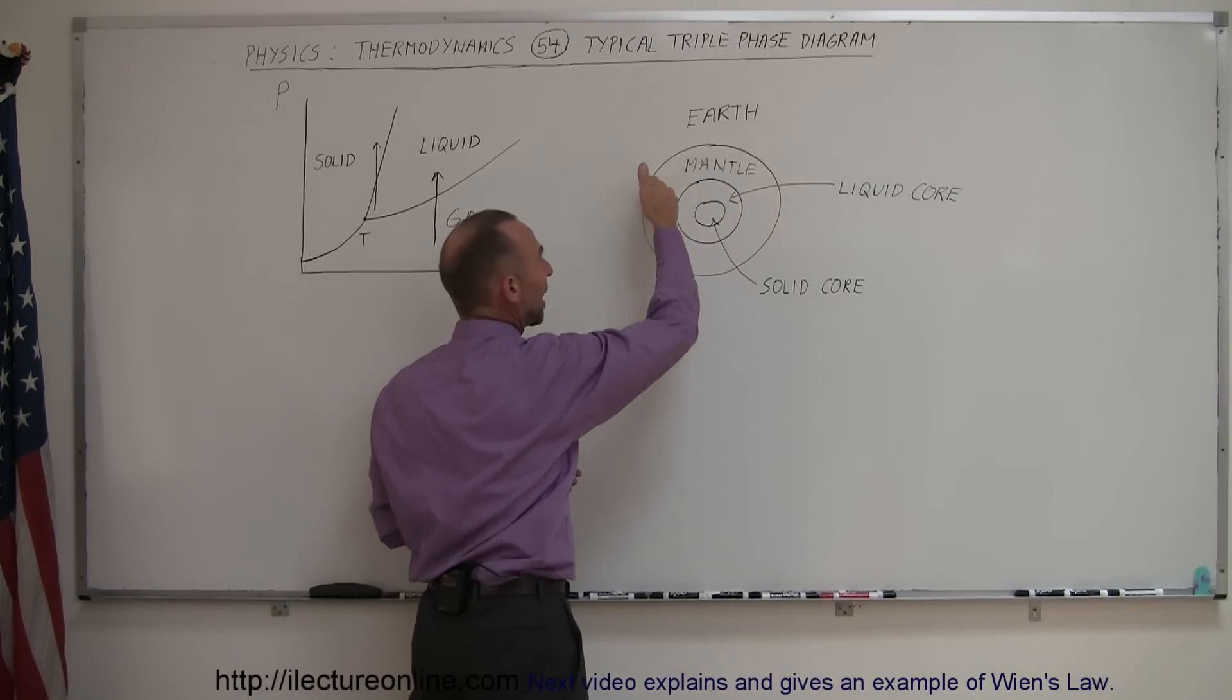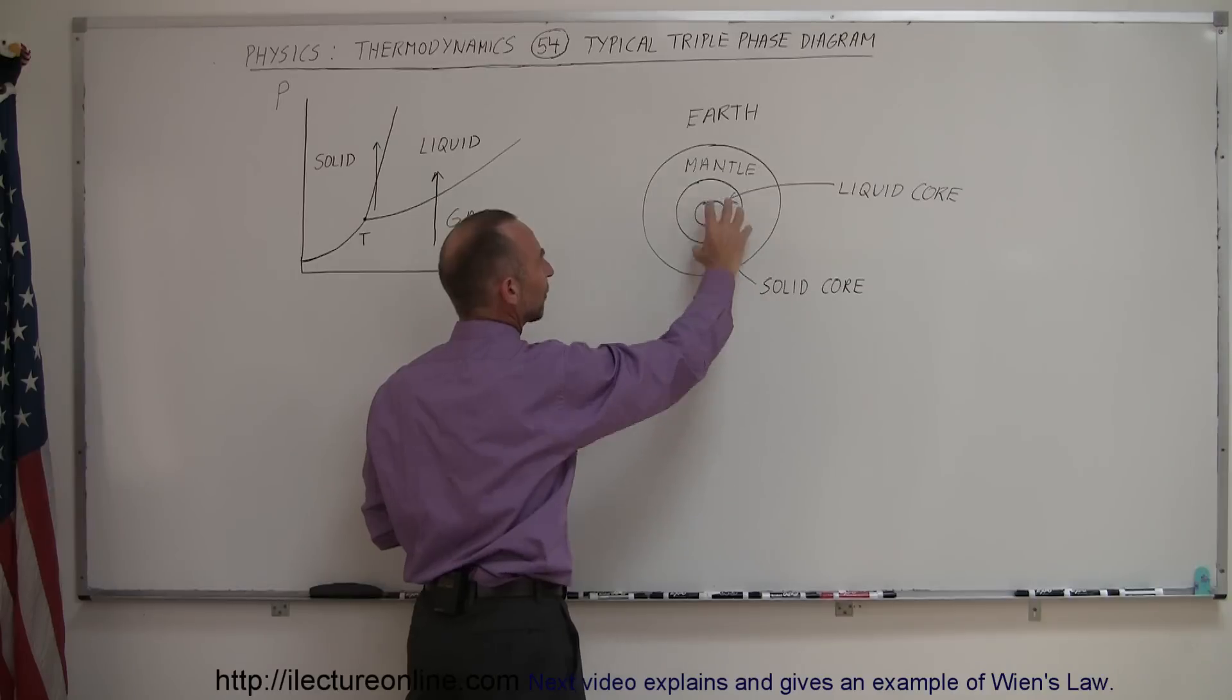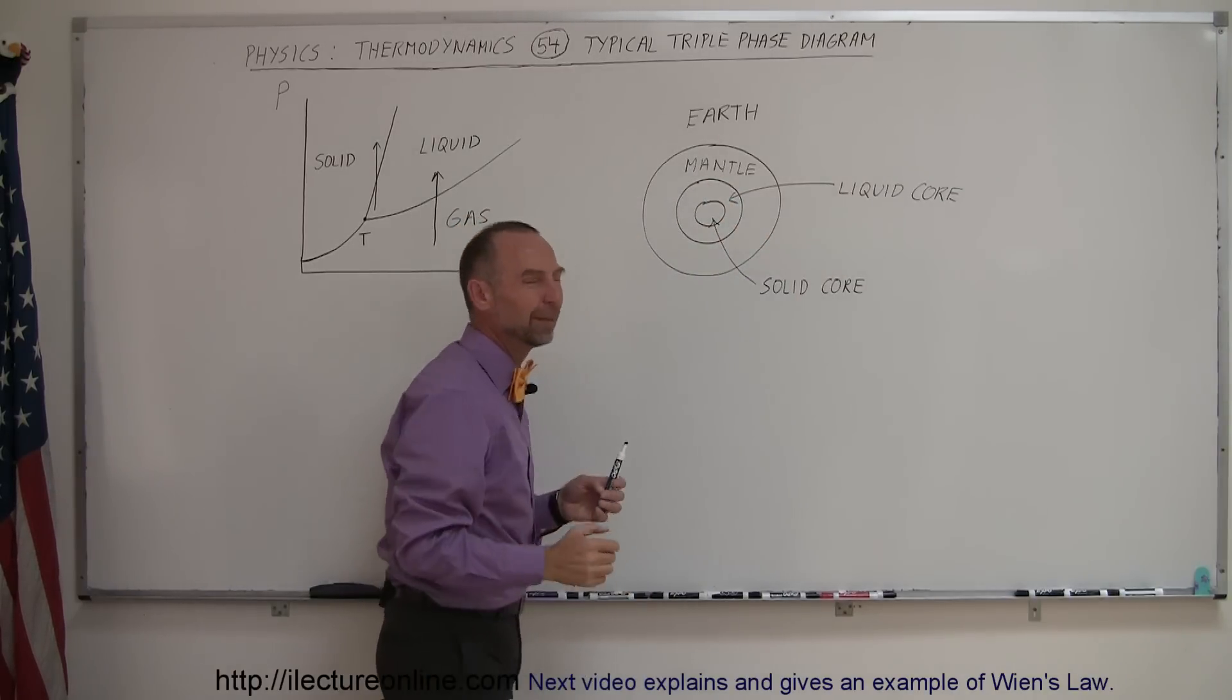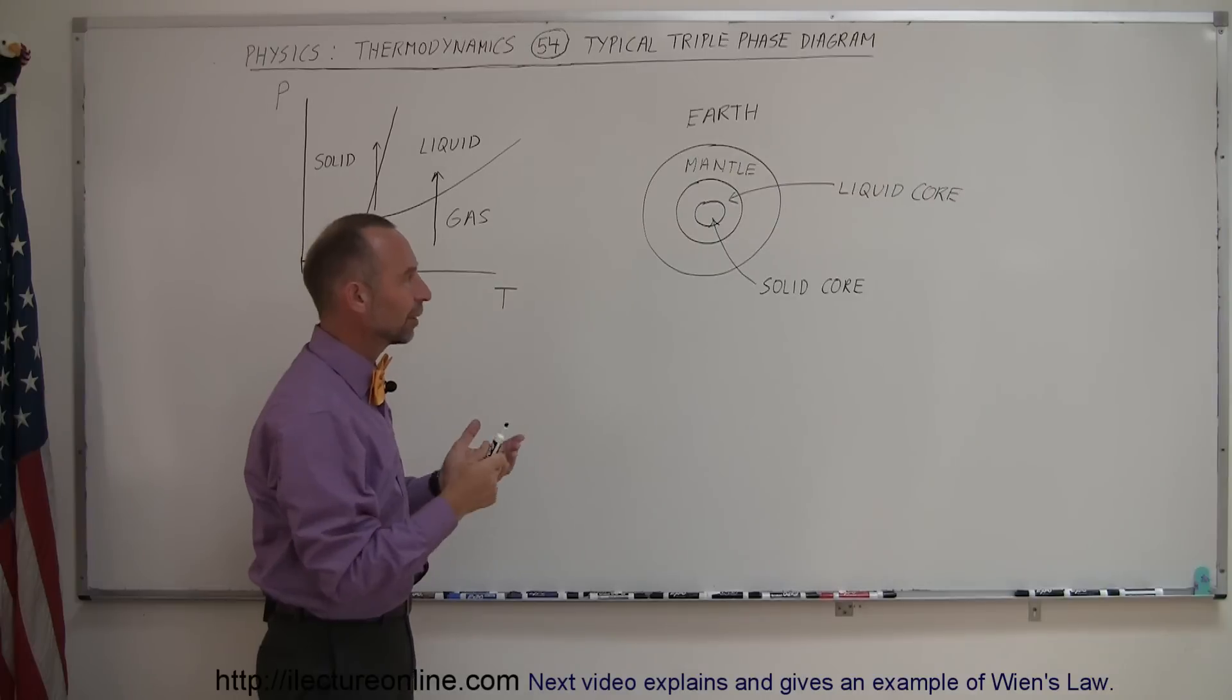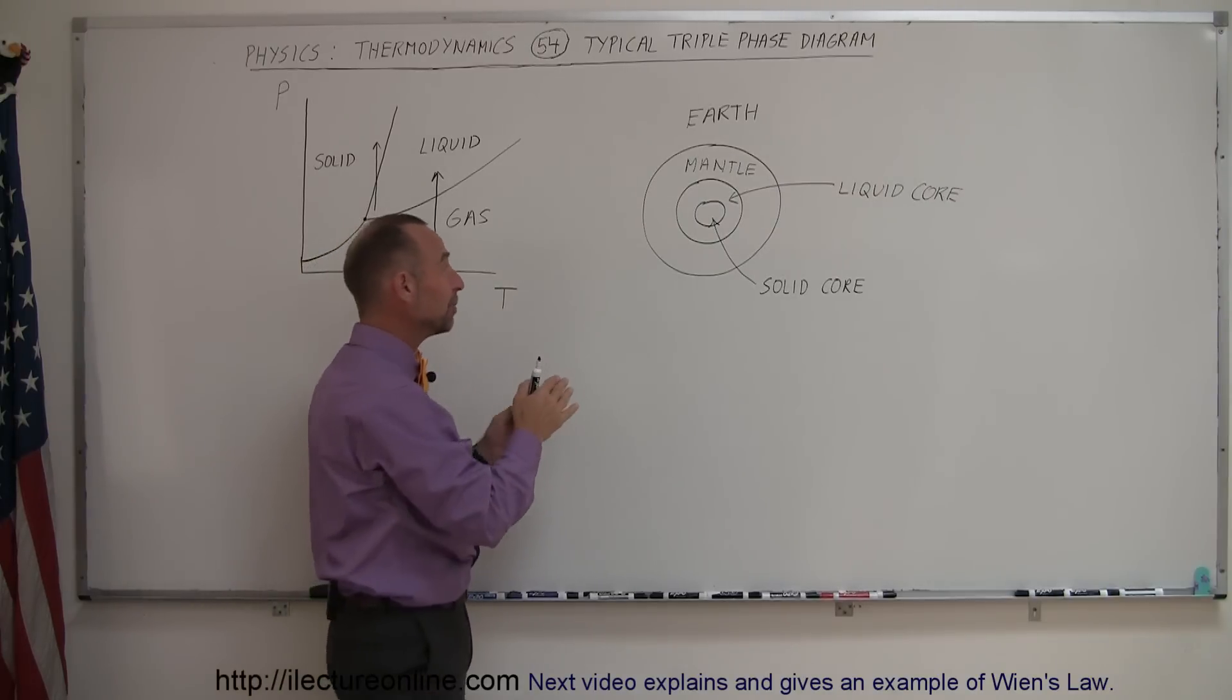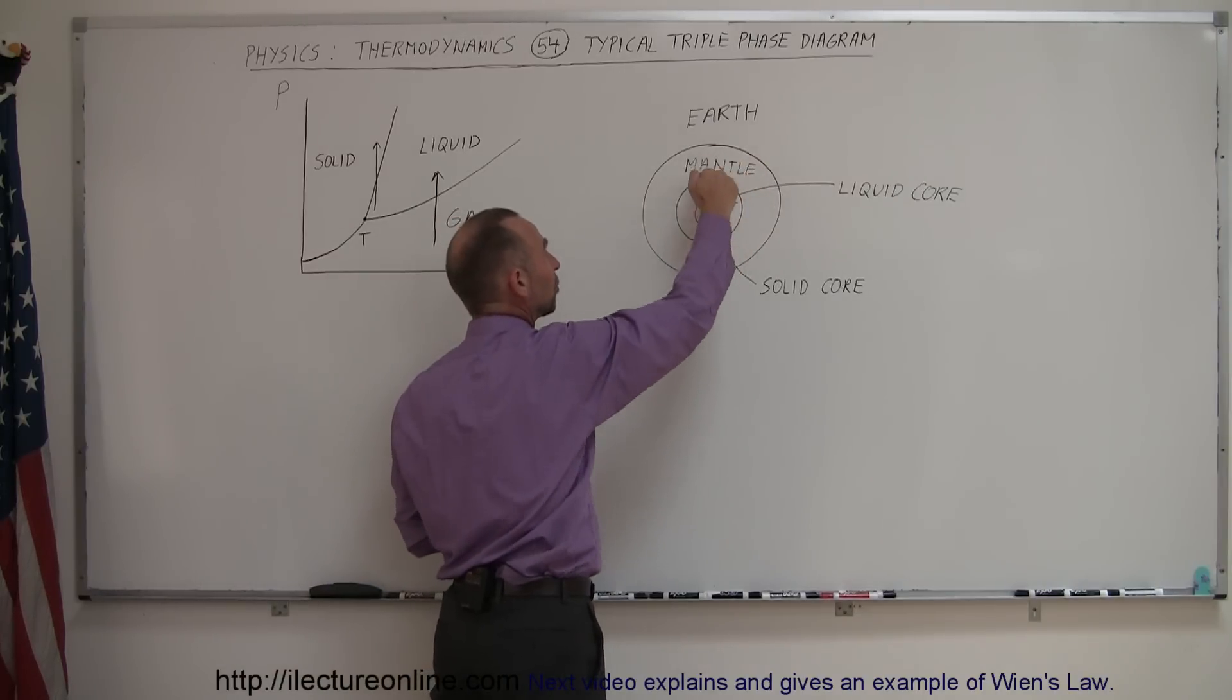Here of course we have the mantle that has mostly molten rock. Then if you go further down into the earth we have the core, and the outside region of the core is a liquid core because the tremendous temperature, everything is liquefied. But then as you go deeper and deeper into the core, the tremendous pressure, the weight of everything else above it, is so great that the liquid metal, because the core is primarily made out of metal, the liquid metal will actually turn into a solid.